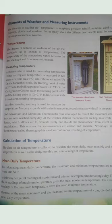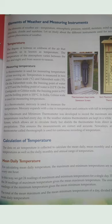Temperature is always measured in degrees centigrade or Celsius. The degree of hotness or coldness of air that surrounds us is known as temperature. The temperature of the atmosphere varies between day and night and from season to season. In the daytime the temperature is maximum and at night it is minimum. In summer the temperature is high, in winter it is low.